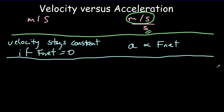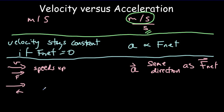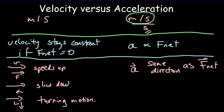Third, acceleration is always in the same direction as the net force — very different for velocity. If the velocity and net force are in the same direction, the object speeds up. If they're in opposite directions, it slows down. And if the velocity and force are in perpendicular directions, we get a turning motion. So those are three ways that velocity is very different from acceleration.